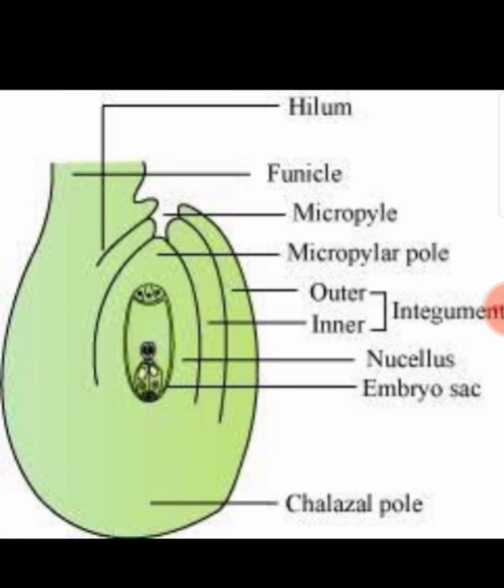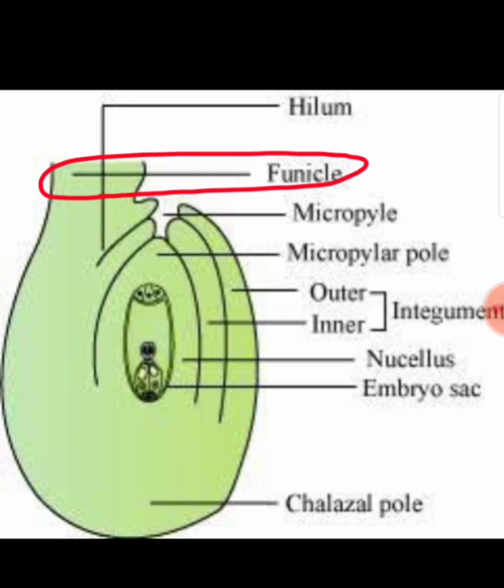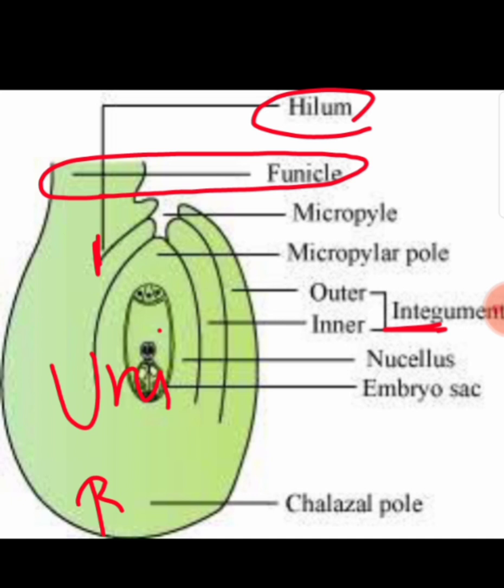Next we have the anatropous ovule, also called the megasporangium. The ovule is attached to the placenta by a stalk called the funicle. The funicle fuses at a region called the hilum. Based on the number of integuments in the ovule: if there is one integument it is unitegmic, and if there are two it is bitegmic.